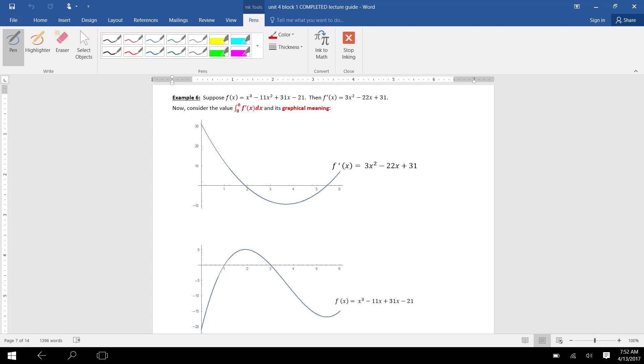In example 6, we've been given both the function f of x, which is a third-degree polynomial. You'll see the graph of f of x on the bottom of the page, as well as f prime of x. Notice, if you look at the equation, this is the derivative of f of x. And we've also been given a graph of f prime of x on the top of the page.